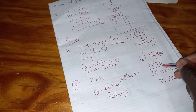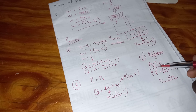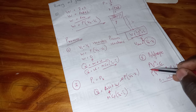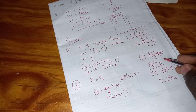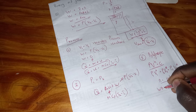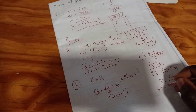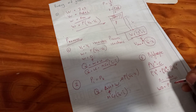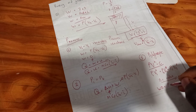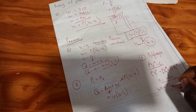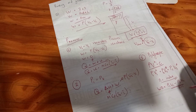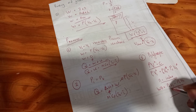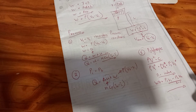So the initial pressure multiplied by initial volume to the power n equals the final pressure multiplied by final volume to the power n. If you find on a question that the process respects this formula, then it is a polytropic process. Under the polytropic process, work done equals P1V1 minus P2V2, all divided by n minus one: W = (P1V1 - P2V2) / (n - 1).